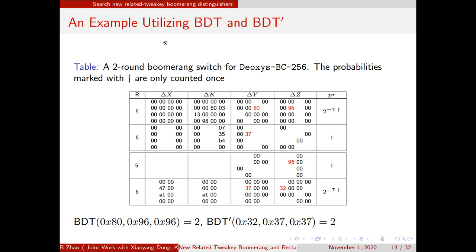And this is an example. We utilize BDT and BDT frame. It's a two-round boomerang switch for Dioxys BC-256. We can see the entry for 8, 0, 96, 96 in BDT is 2. And the entry for 3, 2, 3, 7, 3, 7 in BDT frame is 2. So the probability of them are all 2 to the minus 7.